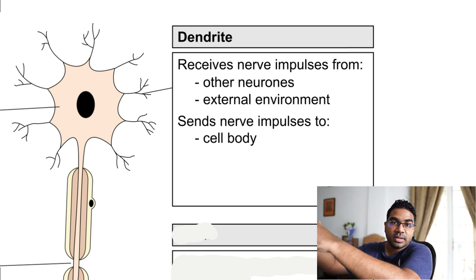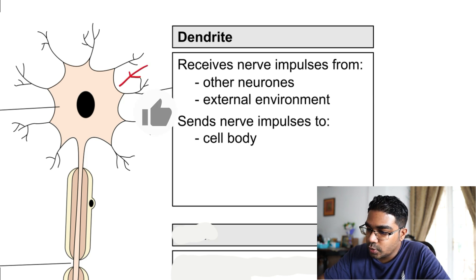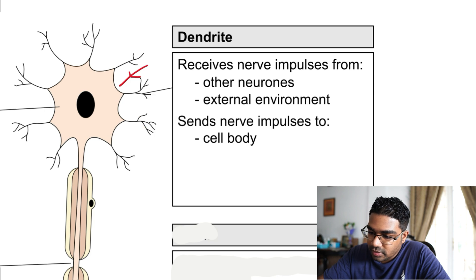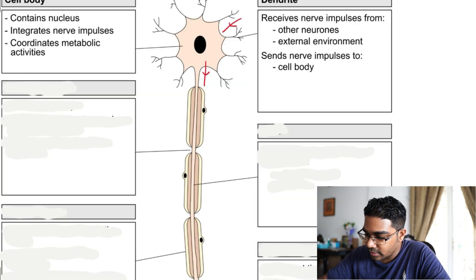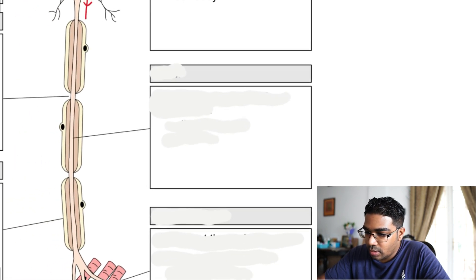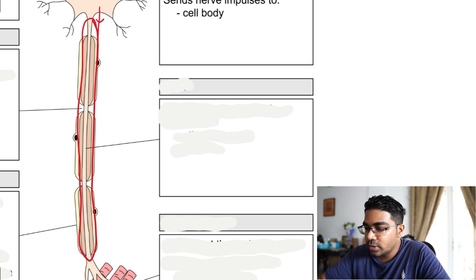Dendrites collect nerve impulses from outside or from other neurons and send them to the cell body — this is the direction of nerve impulse transmission towards the cell body. From the cell body, nerve impulses are conducted downwards. This long branch here is known as the axon.